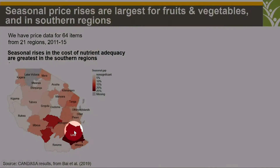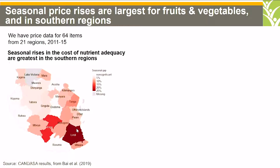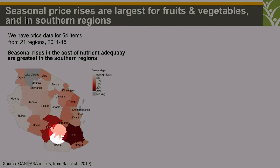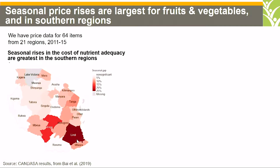The seasonality of prices is largest in fruit and vegetables, particularly in the southern part of Tanzania. As we can see in the diagram here, this is the southern part of Tanzania, and the variation of seasonality is determined by the intensity of the color. You will notice that the colors in this area, on the southern part, are darker than the other areas, so the seasonality is greater in the south.